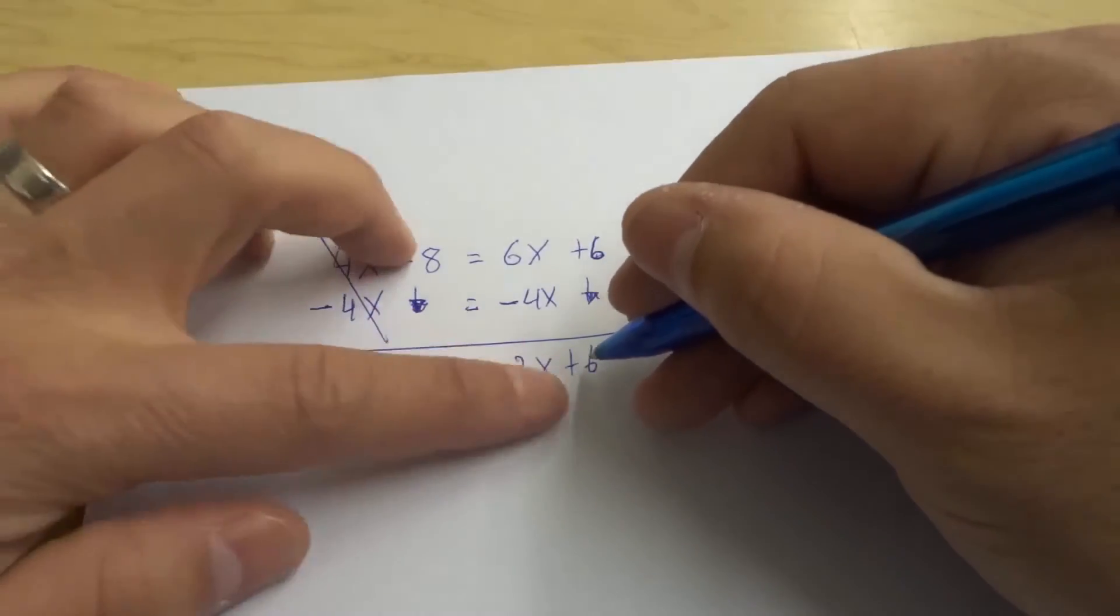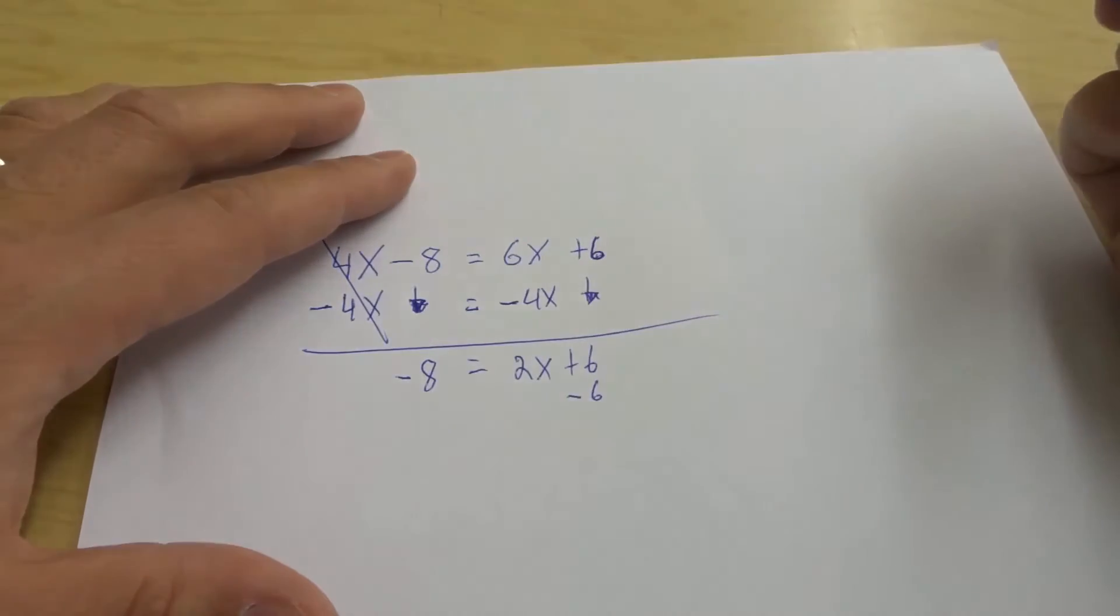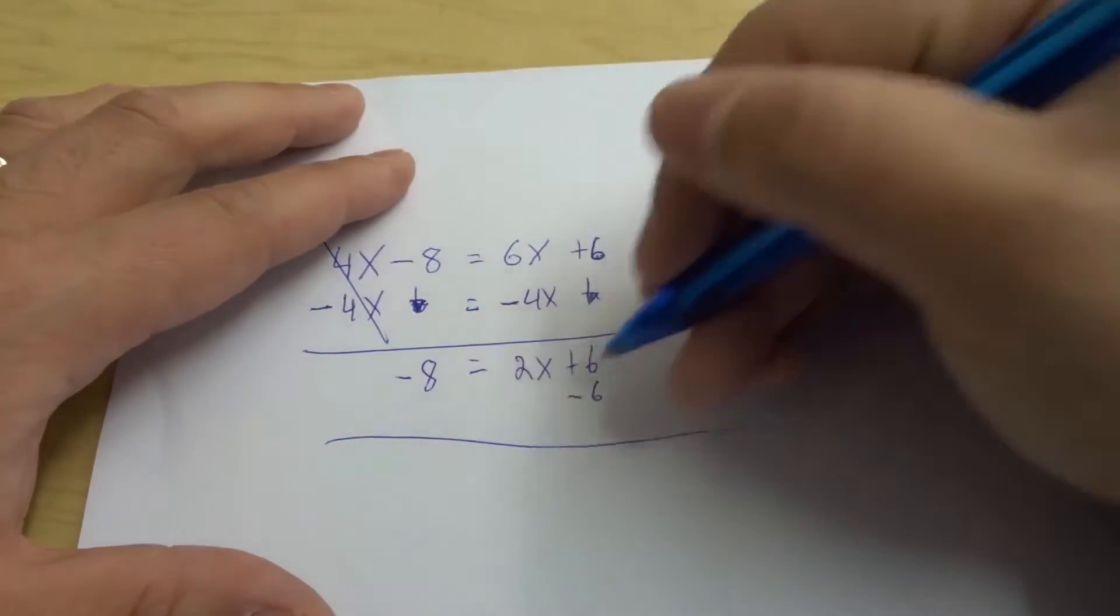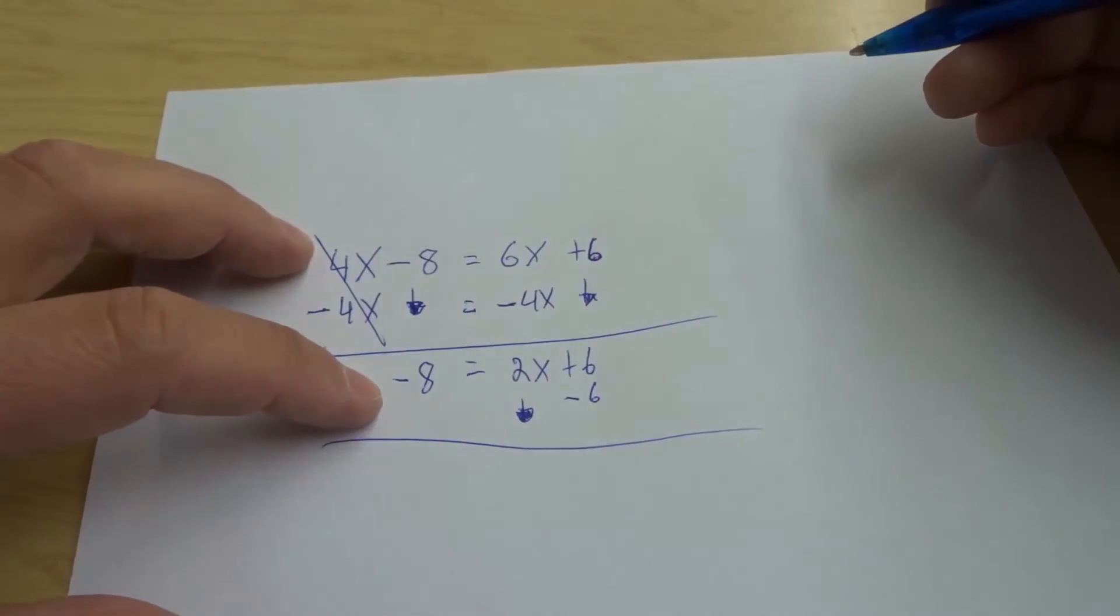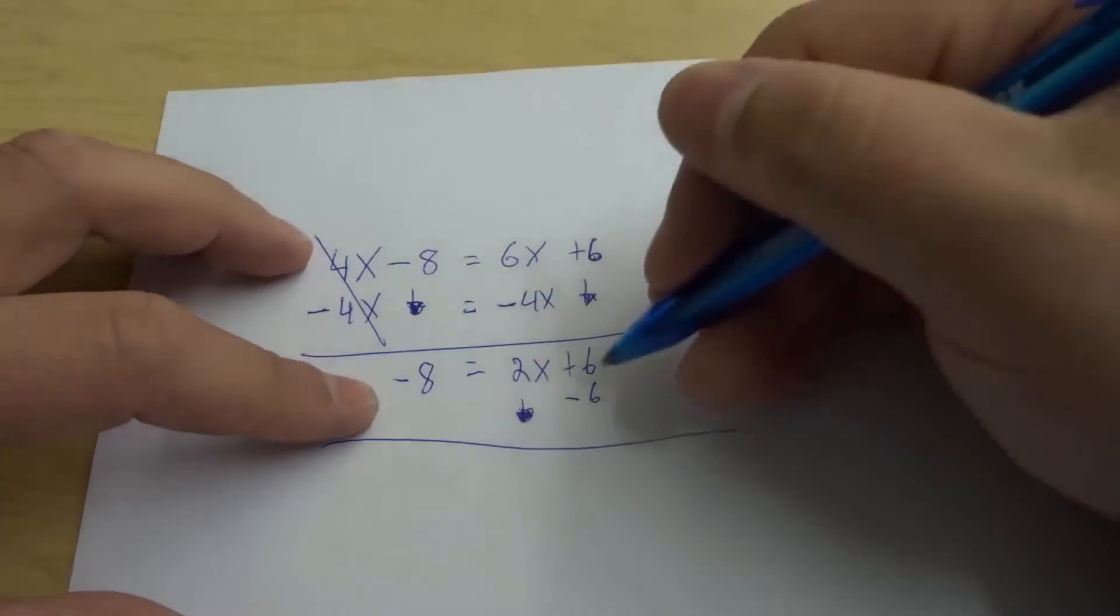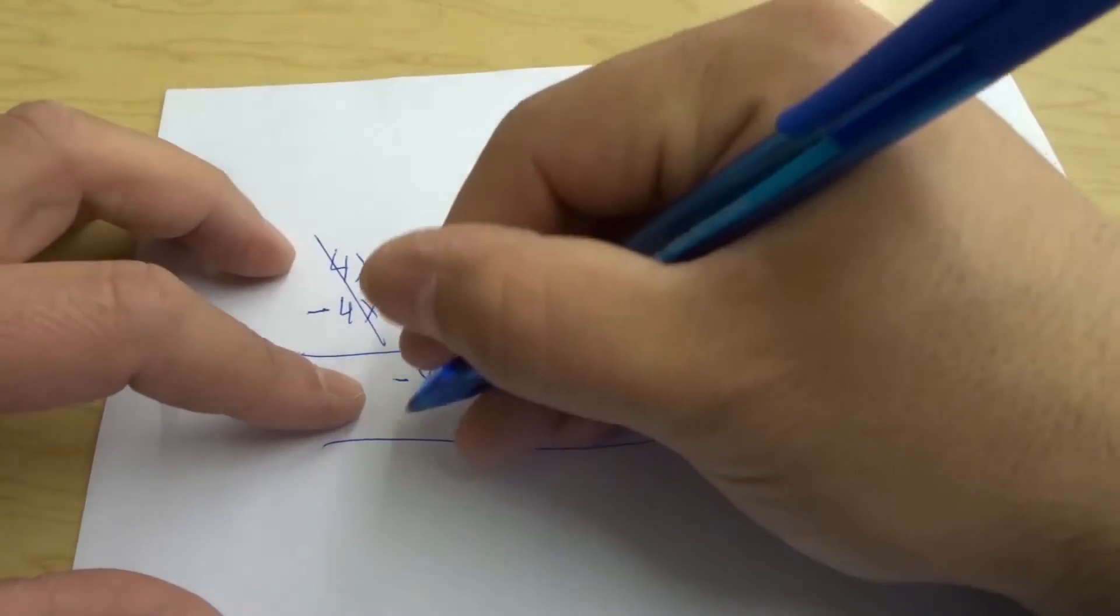So what we're going to do is if we want to do inverse operations from the plus 6 we're actually going to minus 6 just like that and then this gets brought down we're not touching that over there and then from the minus 8 or the negative 8 we're going to also minus 6 on this side because we do the same thing on both sides.